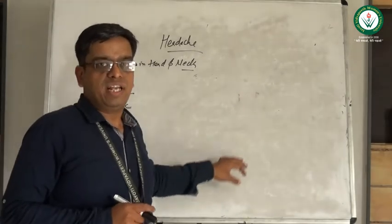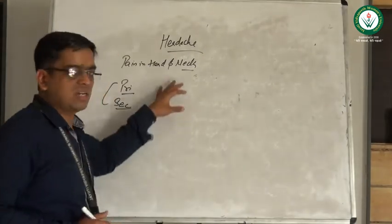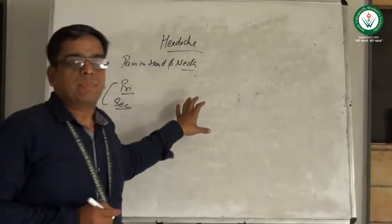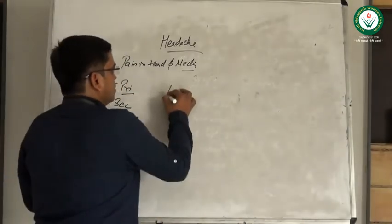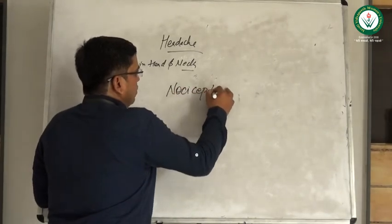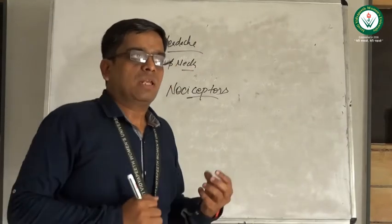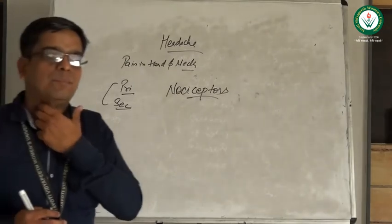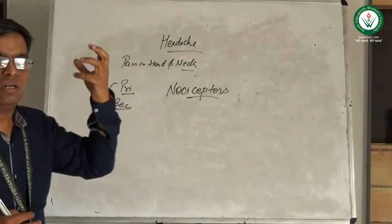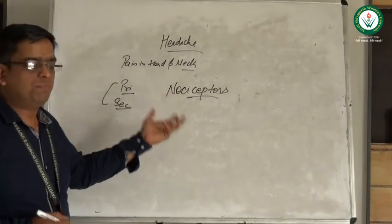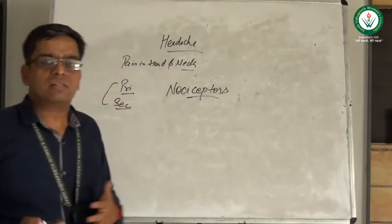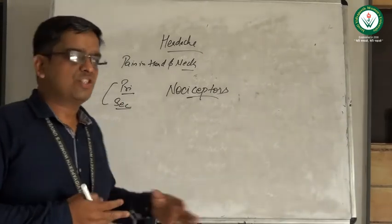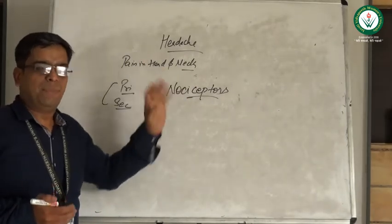We are going to study different types of primary and secondary headache, along with their clinical features, investigations, and management. The main cause of headache is the presence of nociceptors — various receptors present in the brain. When these are stimulated by any means, by any kind of stimulus, they produce the sensation of pain. The pain reaches the head through nerves. It can be due to many factors: when blood vessels are dilating, when there is any kind of injury, trauma, or any other reason that stimulates these nociceptors and produces pain.